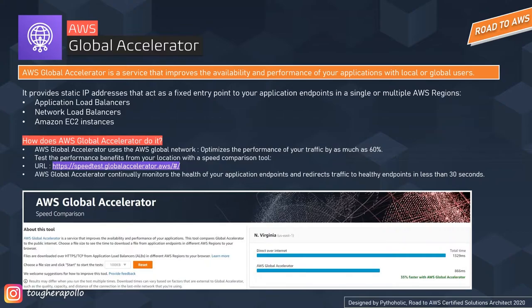You can go to that site and test how long it takes to download a file from your current location to a region of your choice — a comparison of speed with and without Global Accelerator. For example, sitting in India trying to download a file from US East 1 (North Virginia), it is about 35 percent faster with AWS Global Accelerators than a direct connection using the public internet.